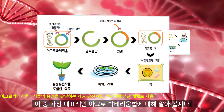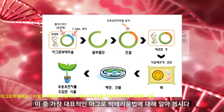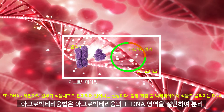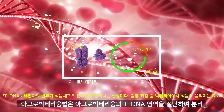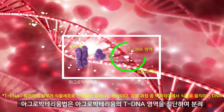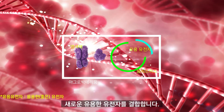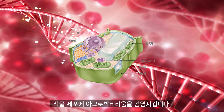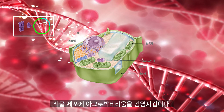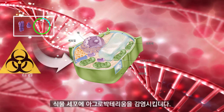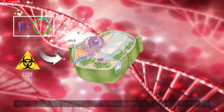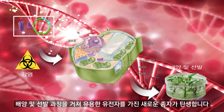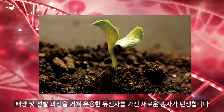이 중 가장 대표적인 아그로 박테리움 법에 대해 알아봅시다. 아그로 박테리움 법은 아그로 박테리움의 T-DNA 영역을 절단하여 분리한 후 새로운 유용한 유전자를 결합합니다. 식물 세포에 유용한 유전자가 결합된 아그로 박테리움을 감염시킨 뒤, 배양 및 선발 과정을 거쳐 유용한 유전자를 가진 새로운 종자가 탄생합니다.